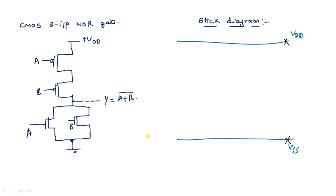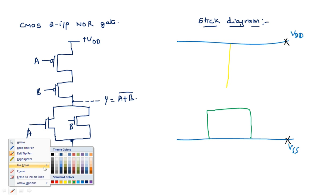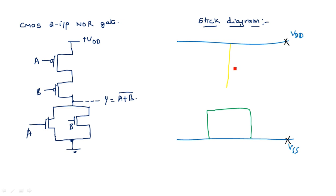Take yellow color for P-plus diffusion. Since the PMOS transistors are in series, draw a straight yellow line for the pull-up network. Then take green color for the pull-down NMOS transistors — since they are in parallel, connect them like this. Now take red color for the polysilicon lines to represent the transistors. In the pull-up region there are two transistors: one with input A and the other with input B.